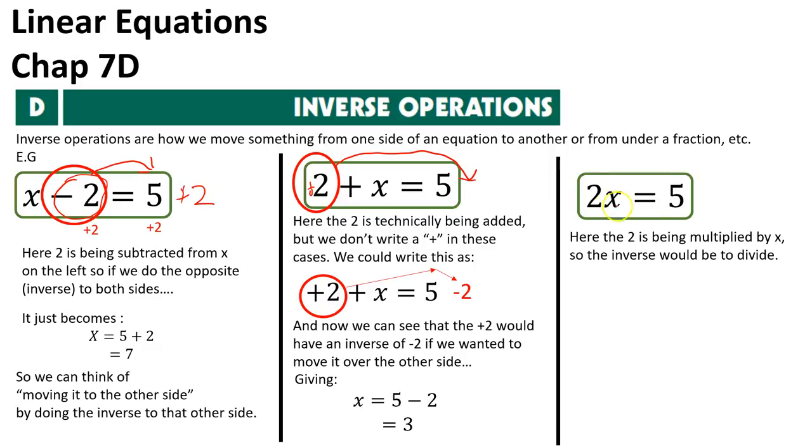So on this question here, I've got 2x equals 5. So the 2 is the thing I need to move, and we can see that it's 2 times x. So the sign is actually a little times in there, and that's the thing I need to find the inverse of. So the inverse of times is divide.